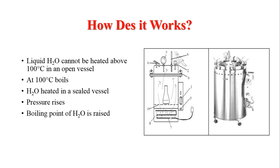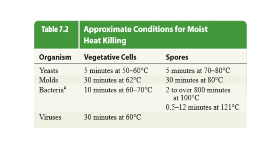Approximate moist heat killing conditions: for yeast, 5 minutes at 50–60°C; for mold spores, 5 minutes at 70–80°C; for mold vegetative cells, 30 minutes at 62°C; for bacteria vegetative cells, 10 minutes at 60–70°C; for bacterial spores, up to 800 minutes at 100°C; for viruses, 30 minutes at 60°C or 0.5–12 minutes at 121°C. Keeping all these in mind, the overall standard autoclave conditions are 121°C for 15 minutes at 15 psi pressure.